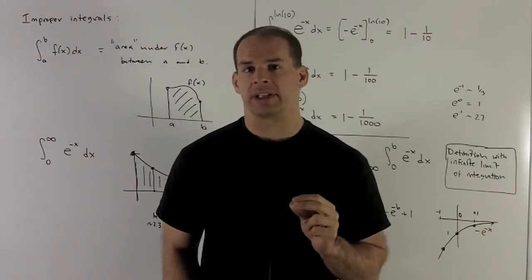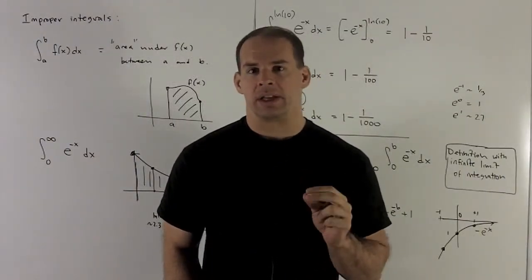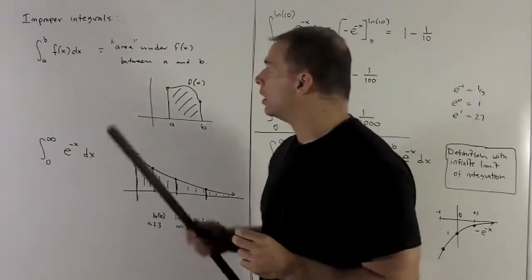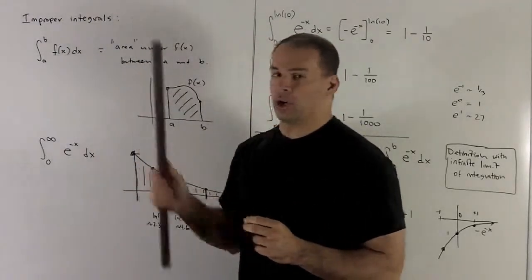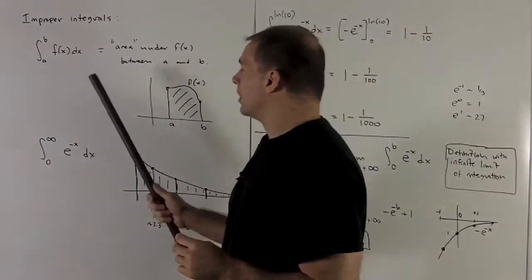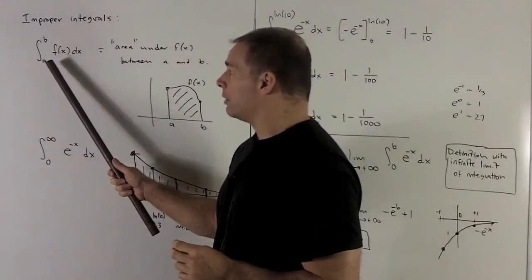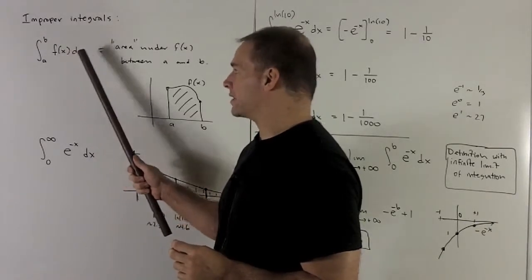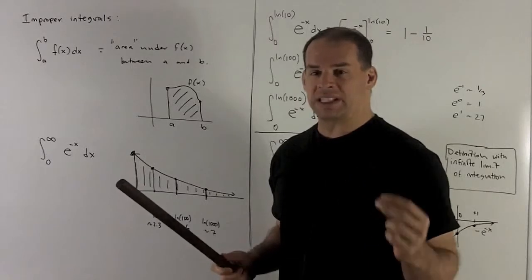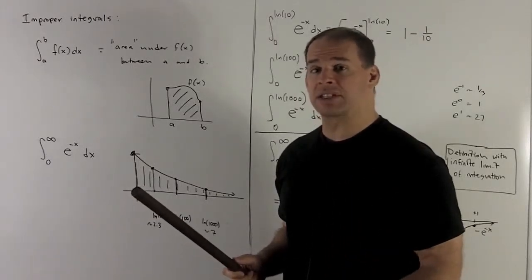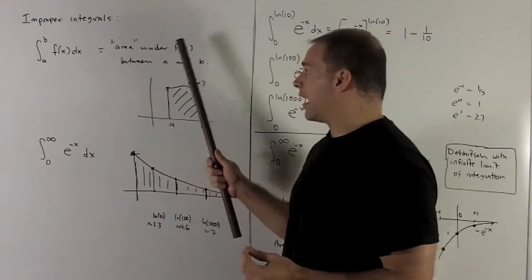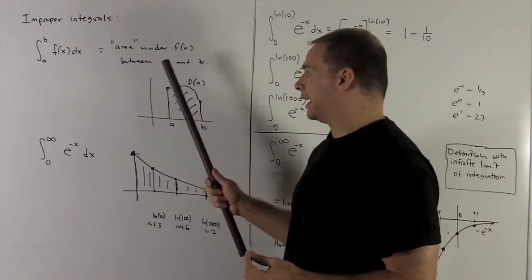Now that we know a lot of integration tricks, we'll take a look at one last idea concerning areas — improper integrals. Let's think about what we've already done. We have the definite integral from a to b of f(x) dx, which we call the area. Area meaning it can be signed if we're under the x-axis, our area picks up a minus sign — the area under f(x) between a and b.